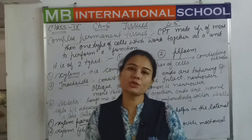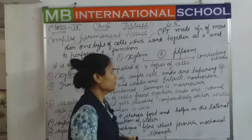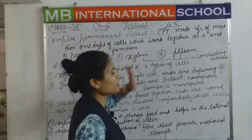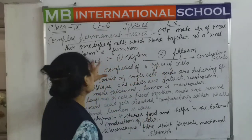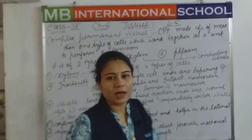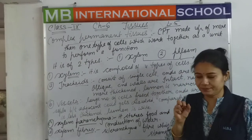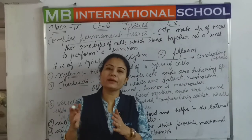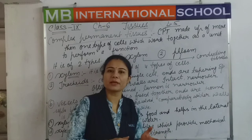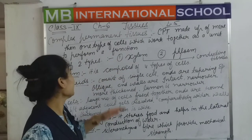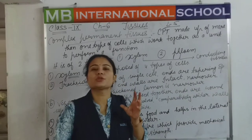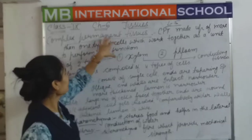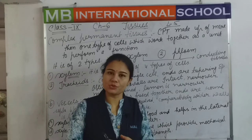The basic definition of complex permanent tissues: complex permanent tissues are made up of more than one type of cells, which work together as a unit to perform a function. It is a group of different types of cells working together as a unit to perform or complete a particular function.